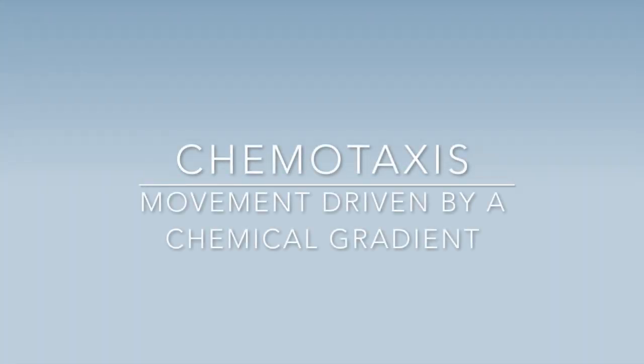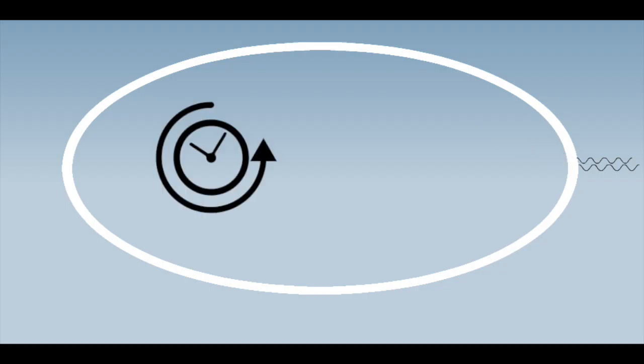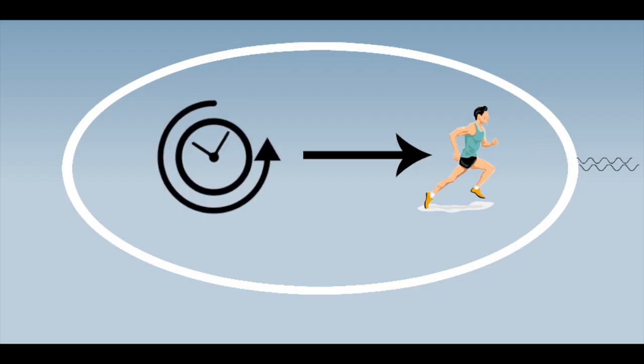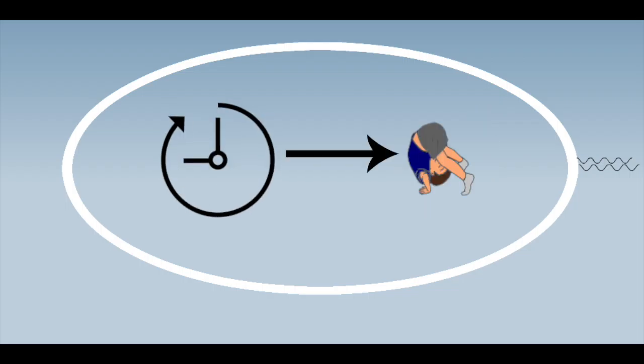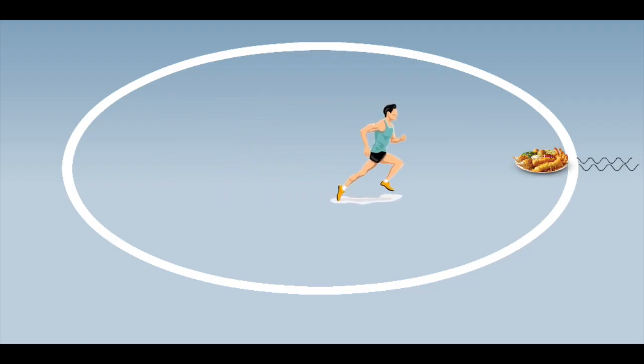Chemotaxis is a migratory process of a bacterial cell driven by a chemical gradient. Bacterial cells use flagellar motors to move around. Flagella can turn in a counterclockwise motion which would result in a run, and can also turn in a counterclockwise motion resulting in a tumble. The action of both running and tumbling can help move a cell closer to a chemical stimulus such as food.